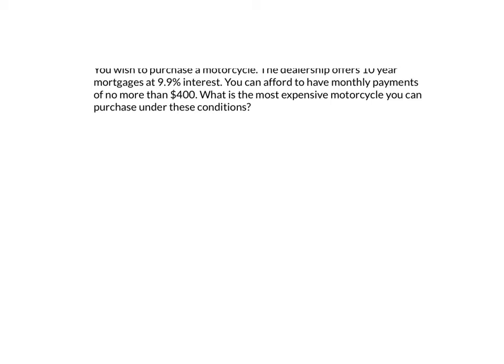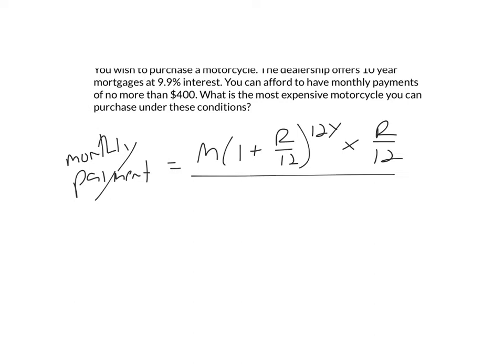Well, here we're dealing with a mortgage, so let's write out our mortgage formula. We know the monthly payment is equal to M, the amount of money that you're mortgaging, times (1 + R/12) raised to the 12Y power, times R/12, all over (1 + R/12) to the 12Y power, take away 1.